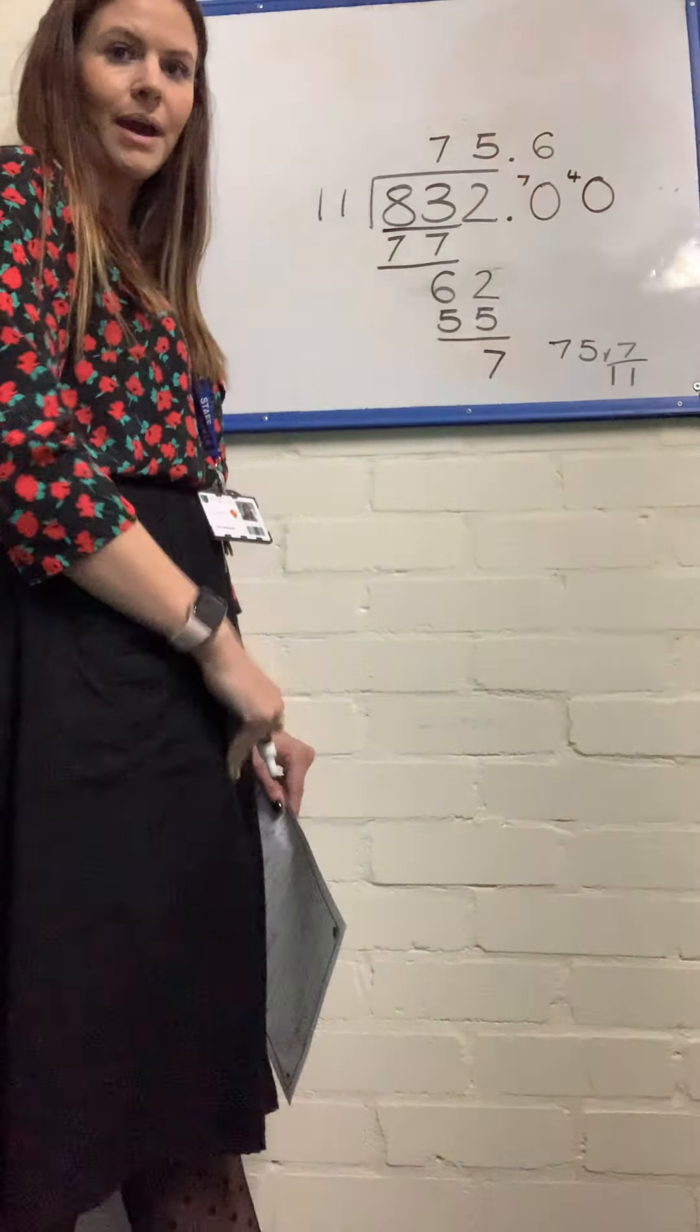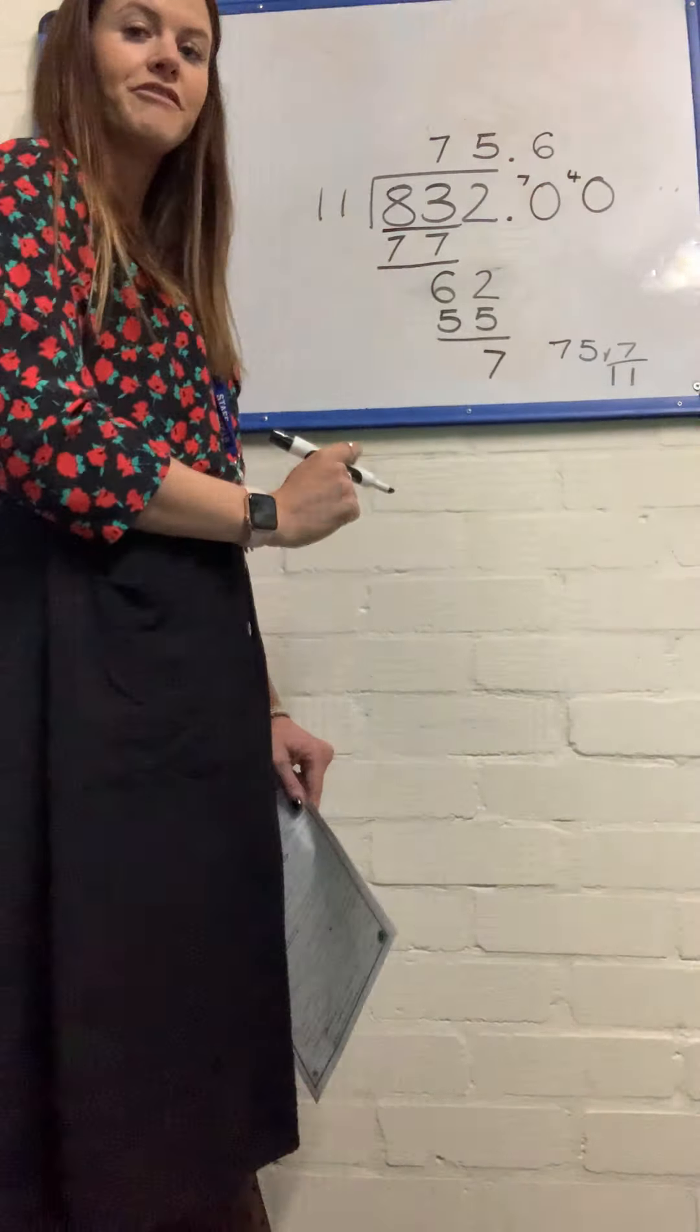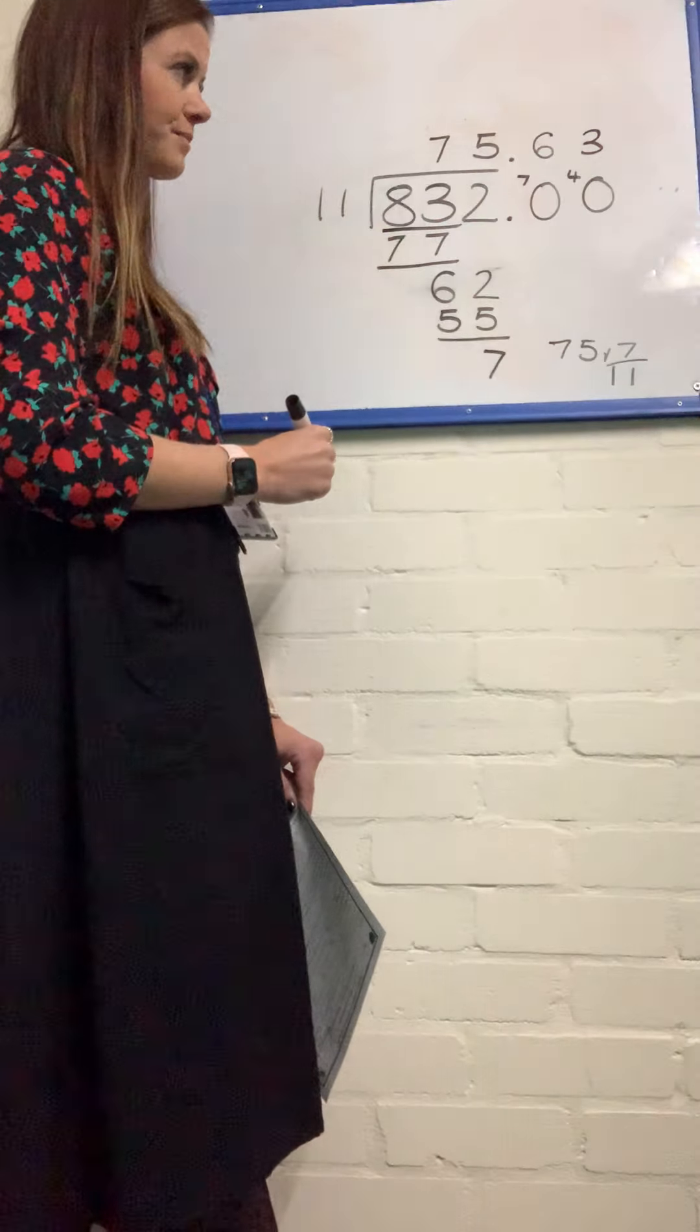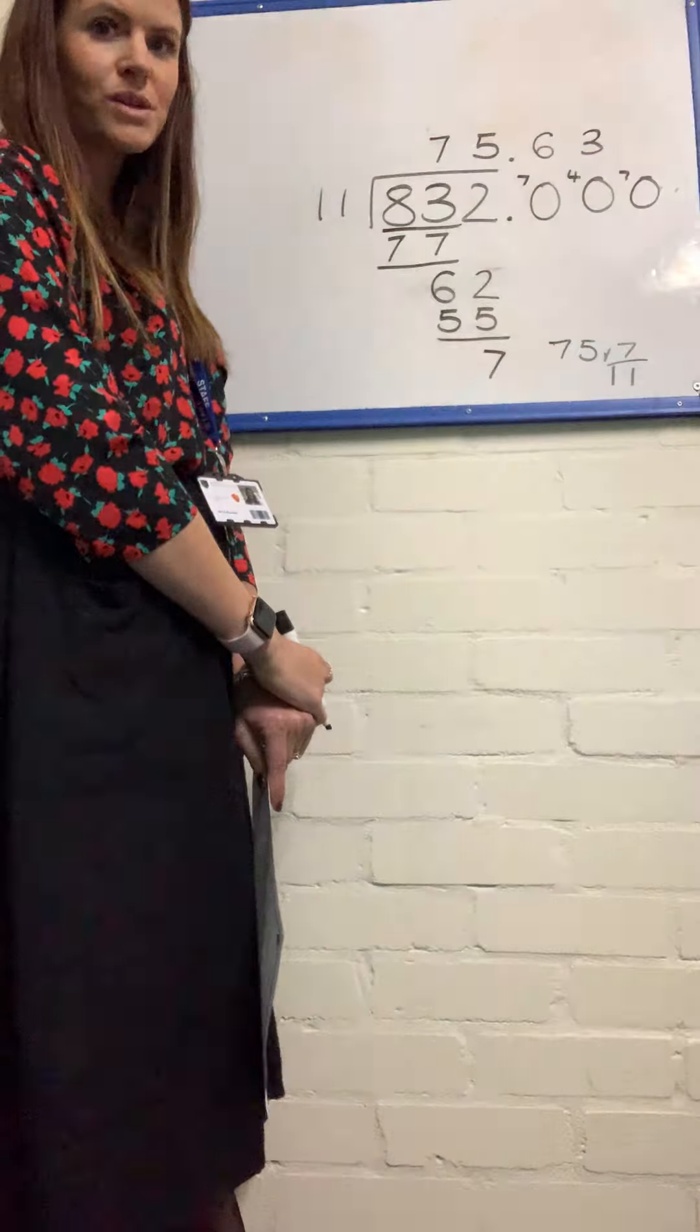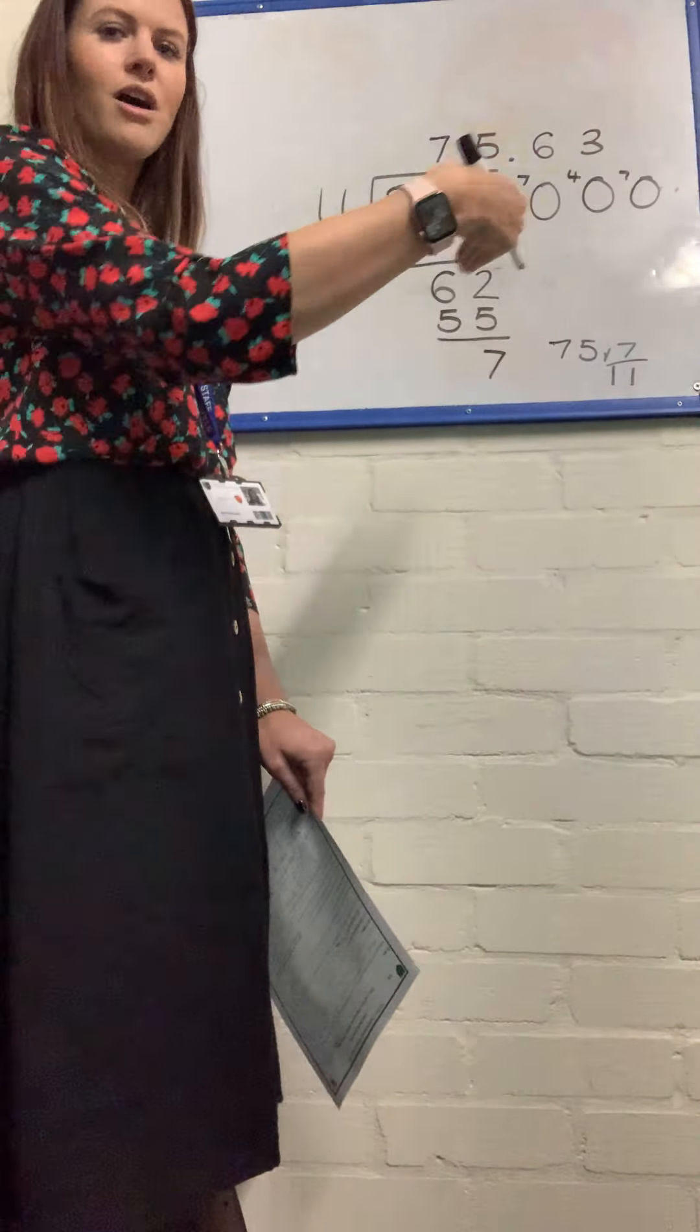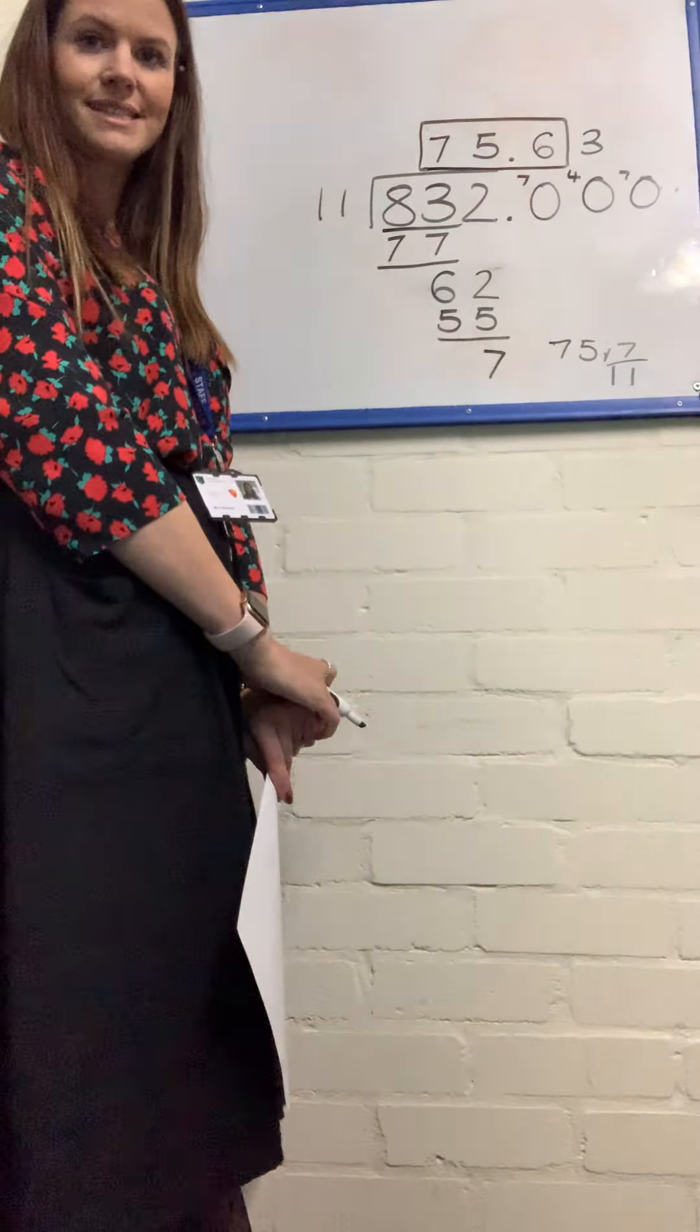So I can put my 4 here now. And it continues, except this time I'm in the hundredths column. How many equal groups of 11 hundredths can I get from 40 hundredths? Or how many 11s are in 40? Well, that would be 3 because 11 times by 3 is 33, with 7 left over. Now as you can see, we're starting to repeat ourselves: 70, 40, 70. So we're going to stop because we now know that our decimal is going to keep going and going. And we can give our final answer as 75.63.